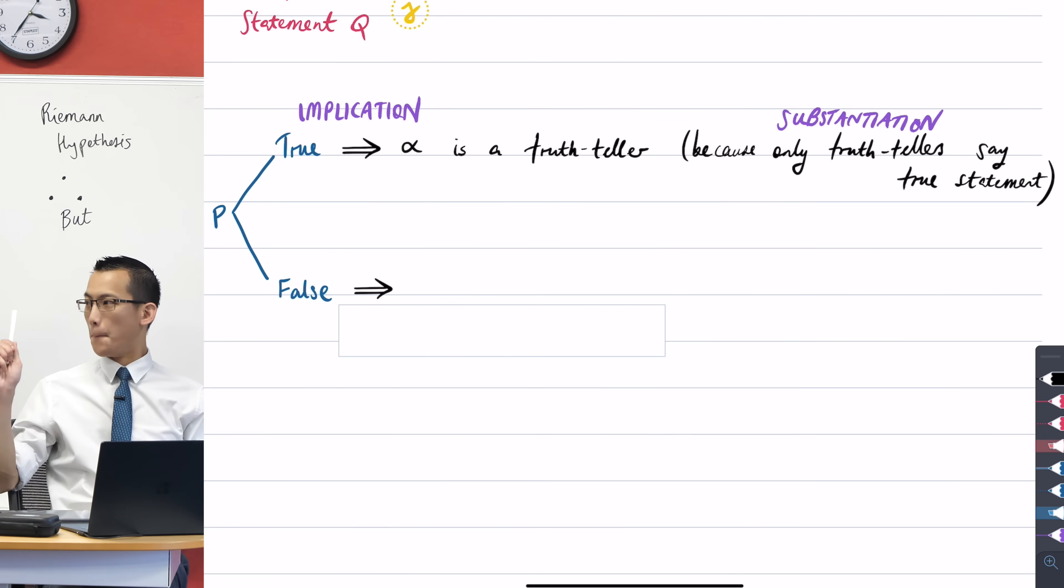Okay, fantastic, but, and I'm going to ask you guys to help me out here, because I heard this argument going around, this is not the only implication if statement P is true. There's another implication, and it causes a problem. What's the other implication if statement P is true? There are three liars, that all of them are liars, which includes alpha, includes himself.